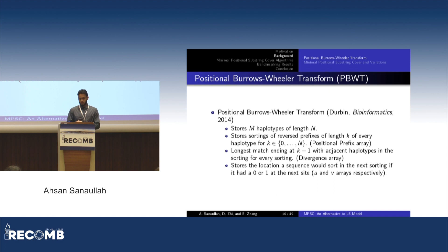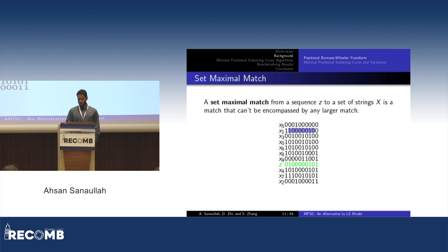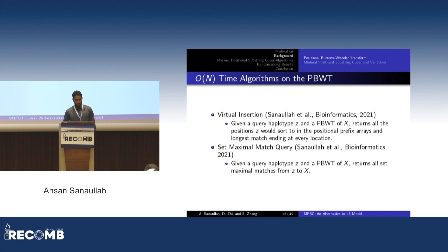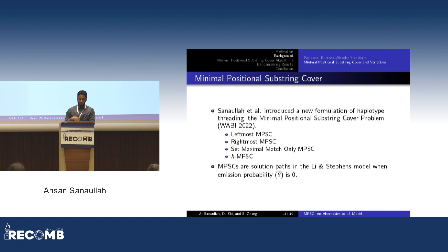The positional Burrows-Wheeler transform stores m haplotypes of length n. It stores the reverse prefixes of length k for all k, and for every k also stores the longest match ending at that site in the difference array. The U and V arrays store the locations in the next sorting where each haplotype goes. Richard Durbin also defined a set-maximal match, which is a match not encompassed by any larger match. Algorithms shown in the PBWT that are linear in the number of sites and independent of the number of haplotypes include virtual insertion, which gives all positions in the sortings a query haplotype achieves along with divergence values, and set-maximal match query, which outputs all set-maximal matches from a query haplotype to the panel.